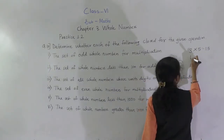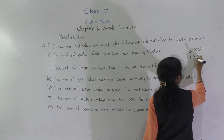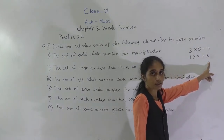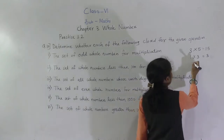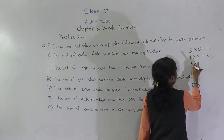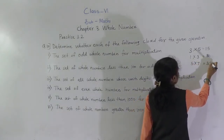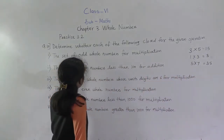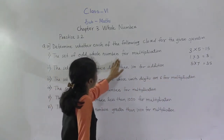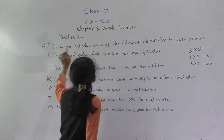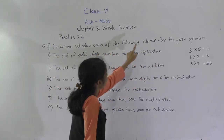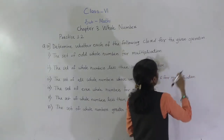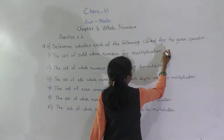Or you can take 1 and 3. 3 ones are 3 — again you get an odd whole number. You can take 5 and 7 also: 5 sevens are 35, again you got an odd whole number. So the set of odd whole numbers is closed for the given operation of multiplication. Yes.